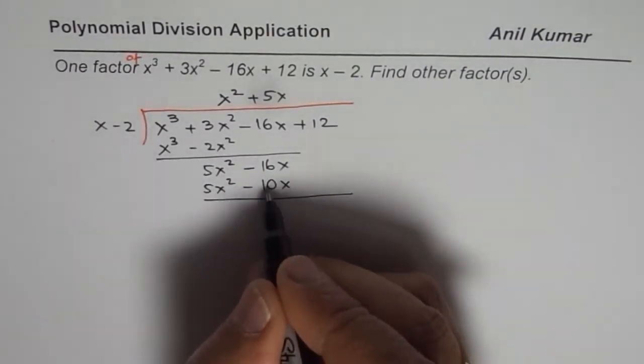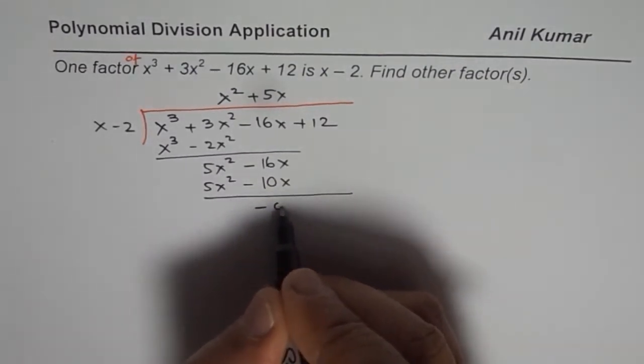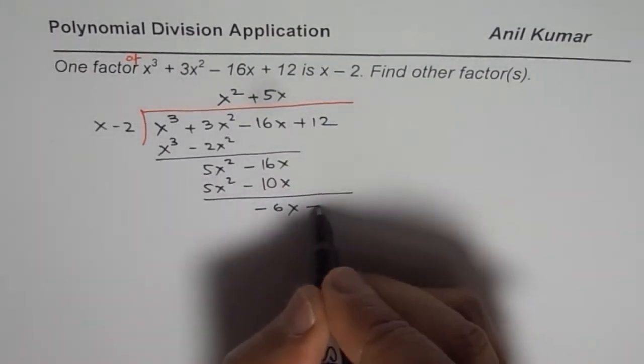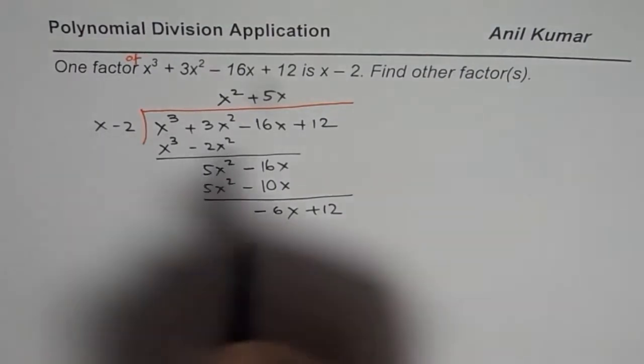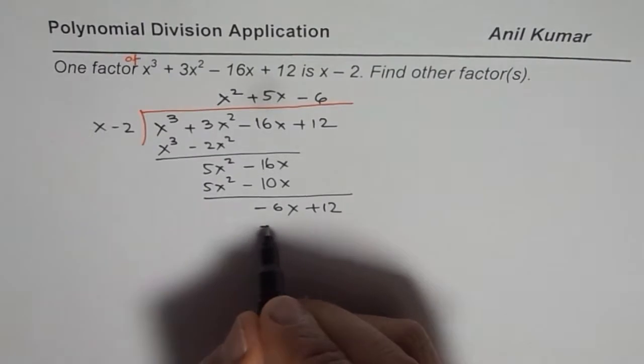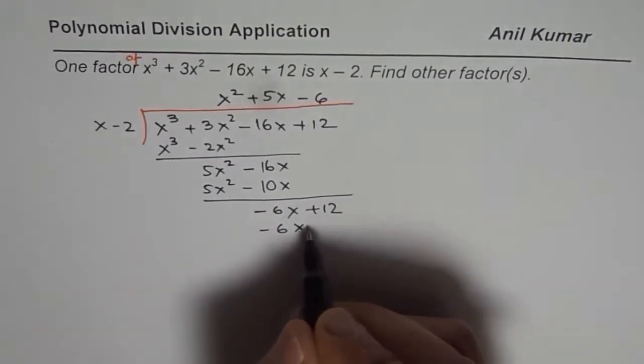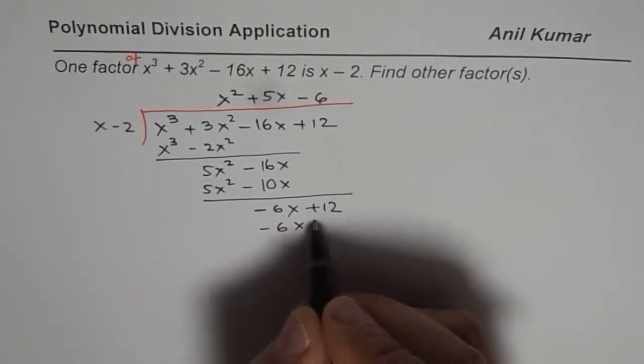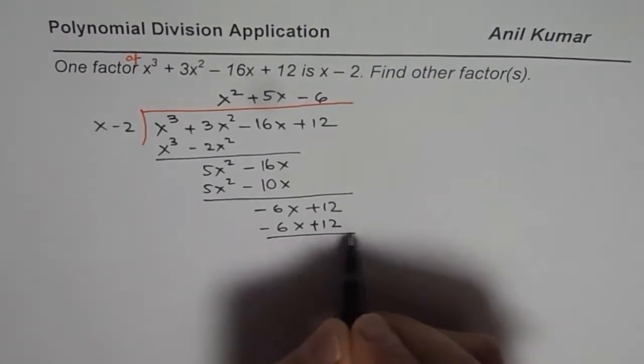So when you do this subtraction, it becomes -6x. Bring down 12, which is +12 here. To take care of -6x,